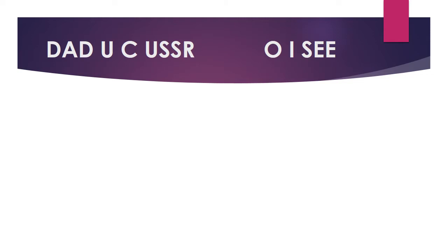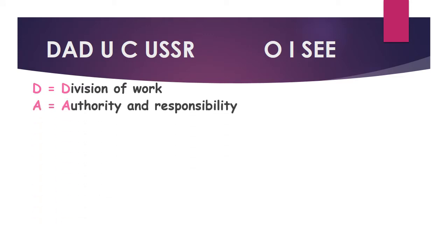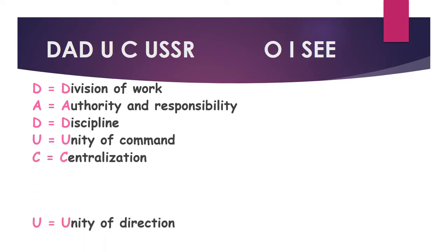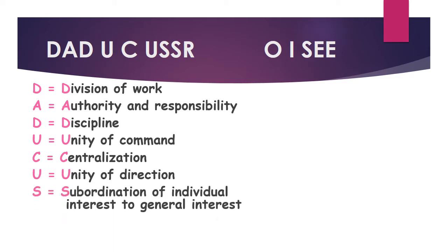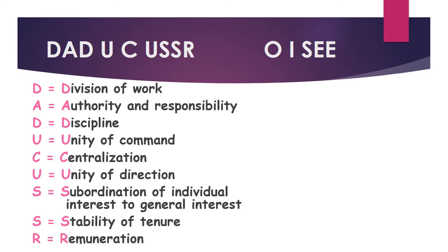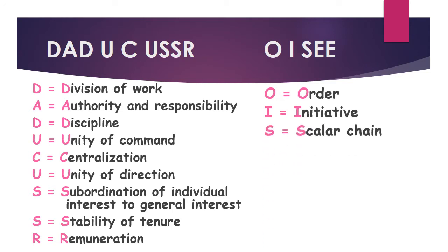The mnemonic for the 14 principles is: DAD UC USSR OIC. D stands for Division of Work, A for Authority and Responsibility, D for Discipline, U for Unity of Command, C for Centralization, U for Unity of Direction, S for Subordination of individual interest to general interest, S for Stability of Tenure, R for Remuneration, O for Order, I for Initiative, S for Scalar Chain, E for Equity, and E for Esprit de Corps.